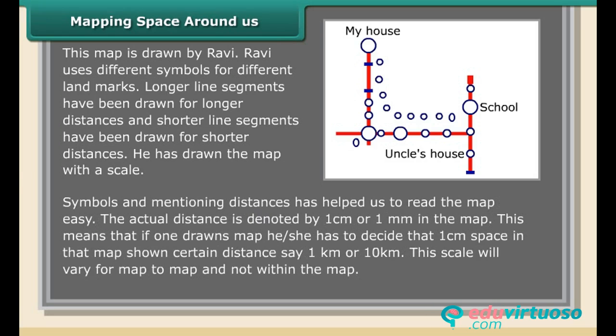He has drawn the map with a scale. Symbols and mentioning distances has helped us to read the map easily. The actual distance is denoted by 1 cm or 1 mm in the map. This means that if one draws a map, he or she has to decide that 1 cm space in that map represents a certain distance, say 1 km or 10 km. This scale will vary from map to map and not within the map.